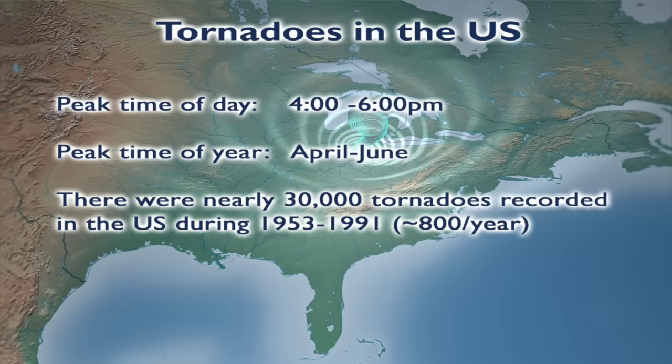There are peak times of the day when tornadoes occur in the United States. The peak time of the day is 4 to 6 p.m. That's at the time of day when much of the heat of the day is actually built up, and that energy, that heat energy has been transferred into these thunderstorm formations as well.